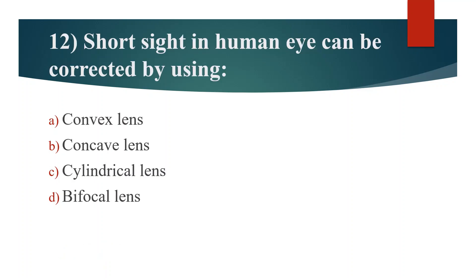Twelfth question. Short sight in human eye can be corrected by using. Option A: Convex lens. Option B: Concave lens. Option C: Cylindrical lens. Option D: Bifocal lens. Answer is Option B: Concave lens.